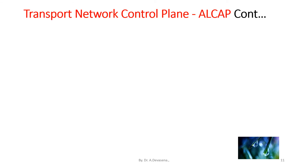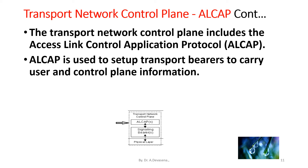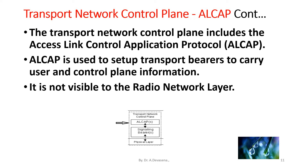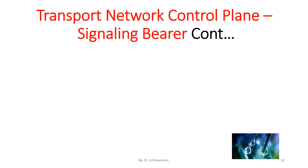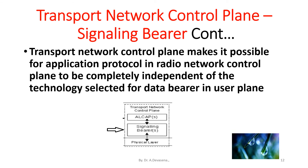The transport network control plane includes the Access Link Control Application Protocol, that is ALCAP. ALCAP is used to set up transport bearers to carry user and control plane information. It is not visible to the radio network layer. The transport network control plane makes it possible for the application protocol in the radio network control plane to be completely independent of the technology selected for the data bearer in the user plane.